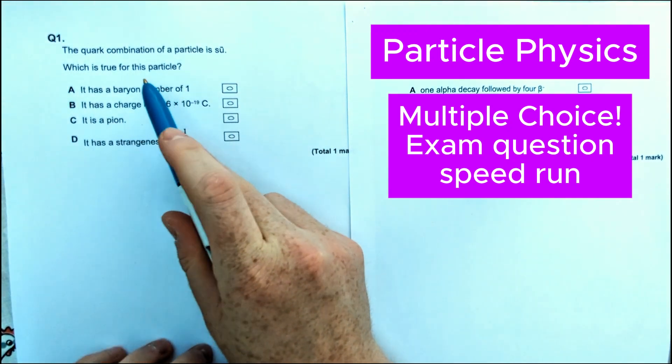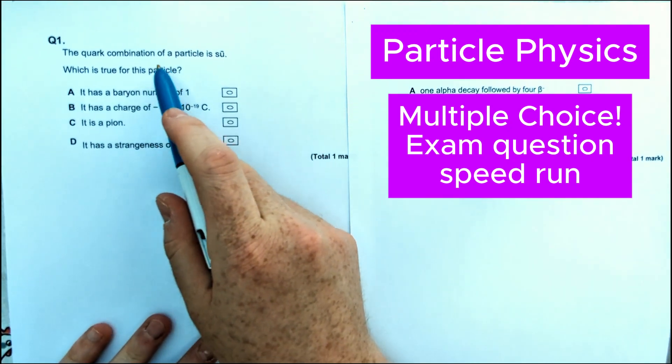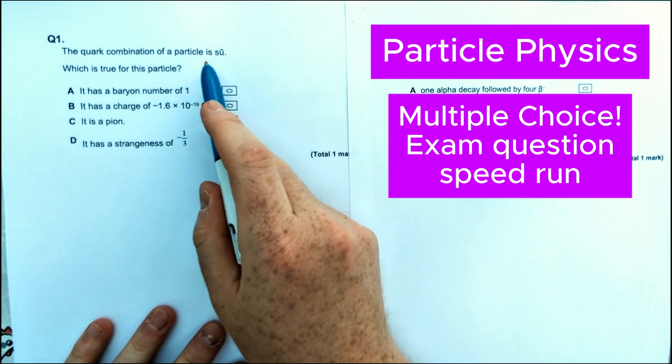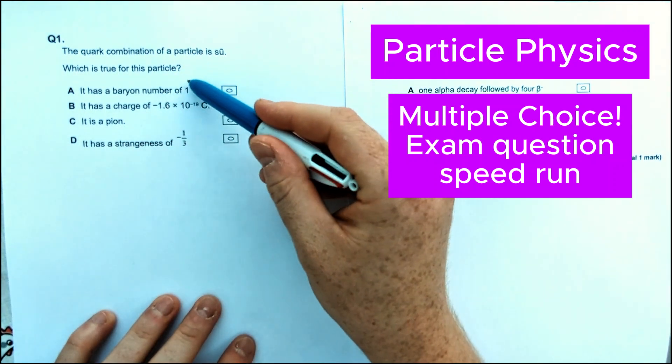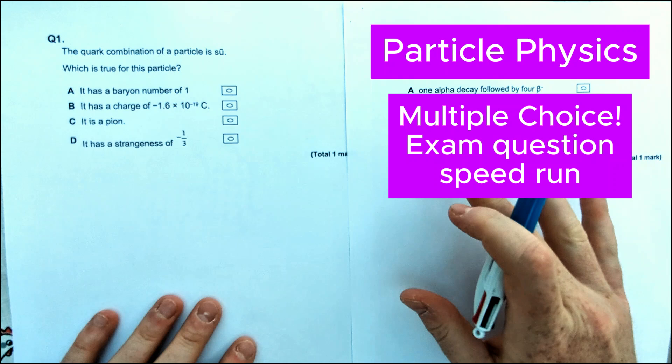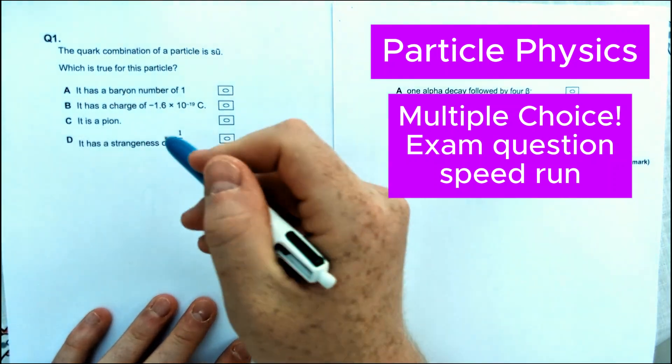Let's do some problem solving to work out this first particle physics question. So as the quark combination of a particle is a strange and an anti-up quark, what is true? We can go through these one at a time and see if we can figure out what the correct answer is.